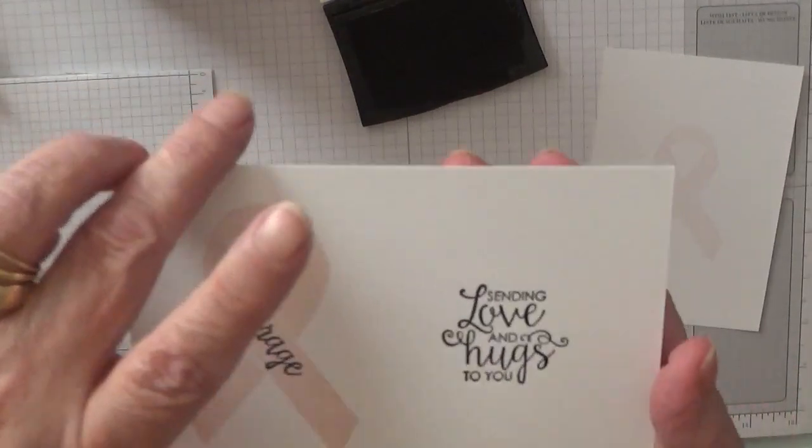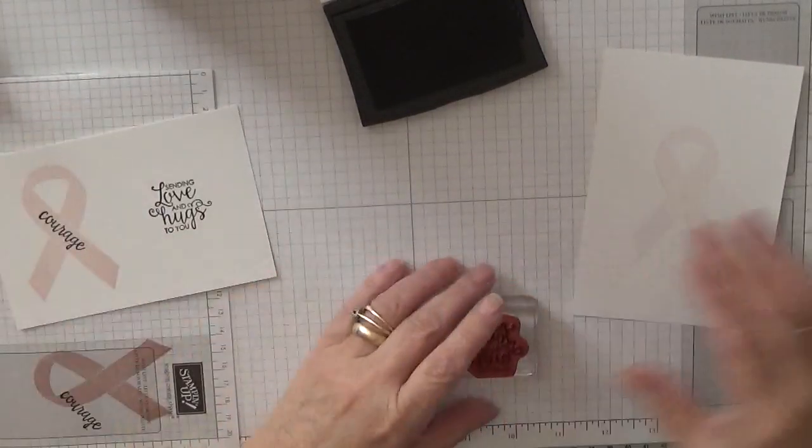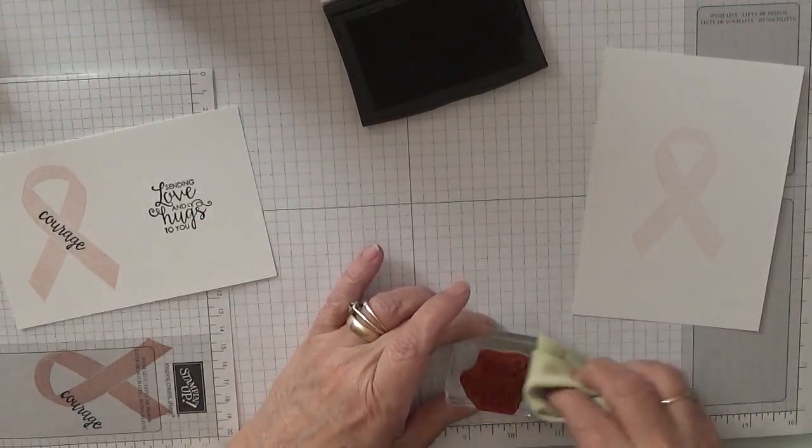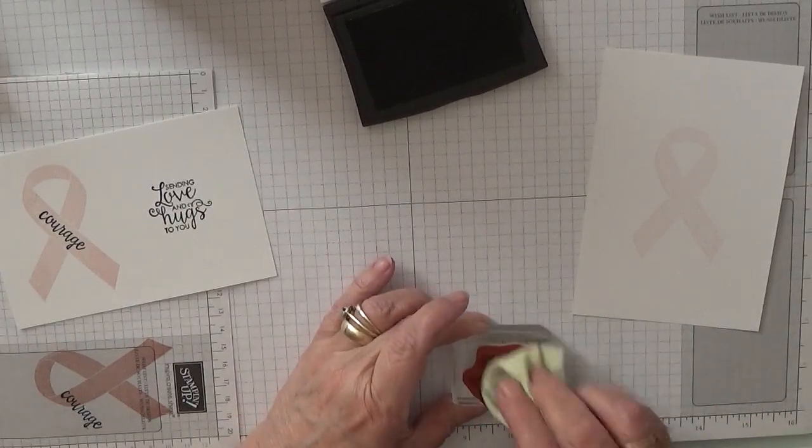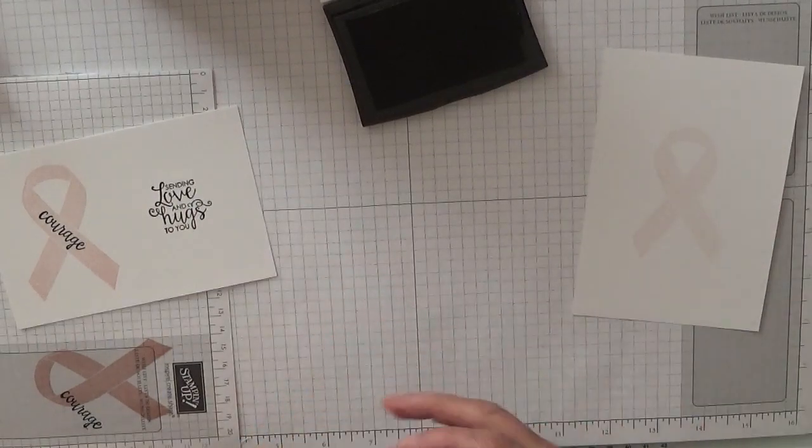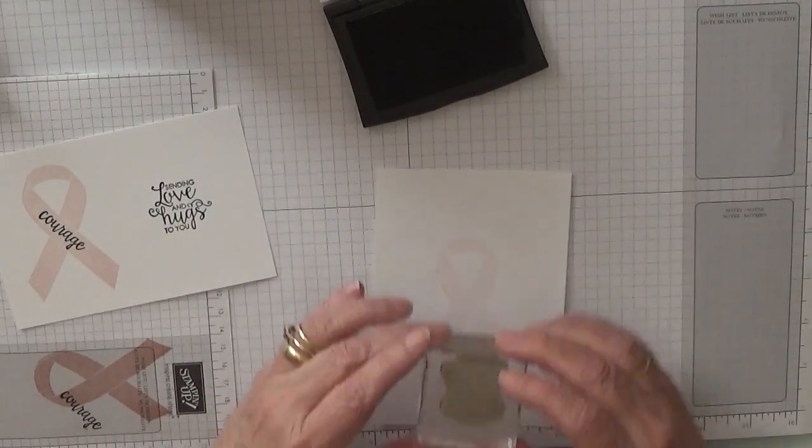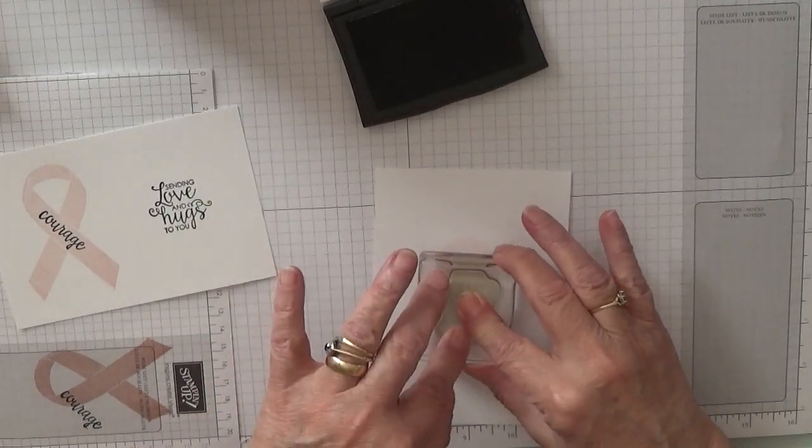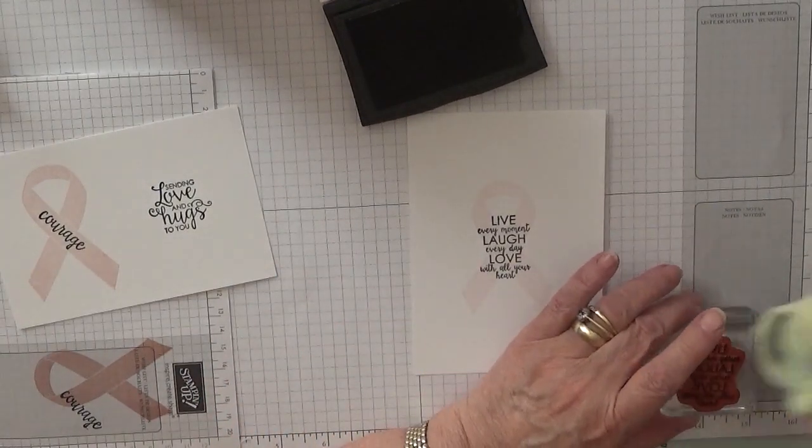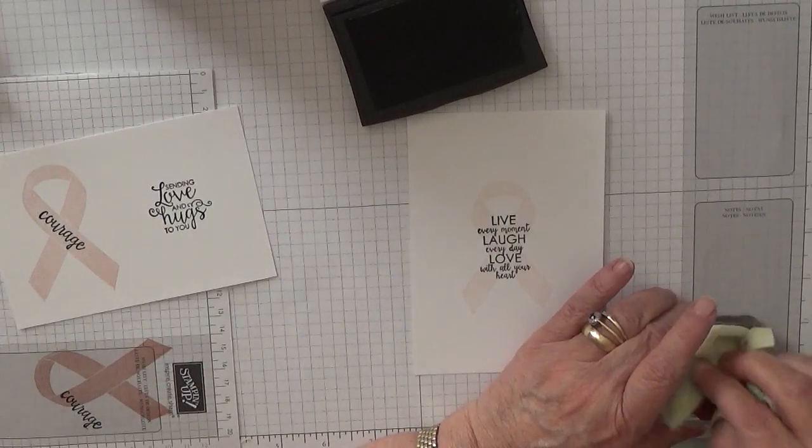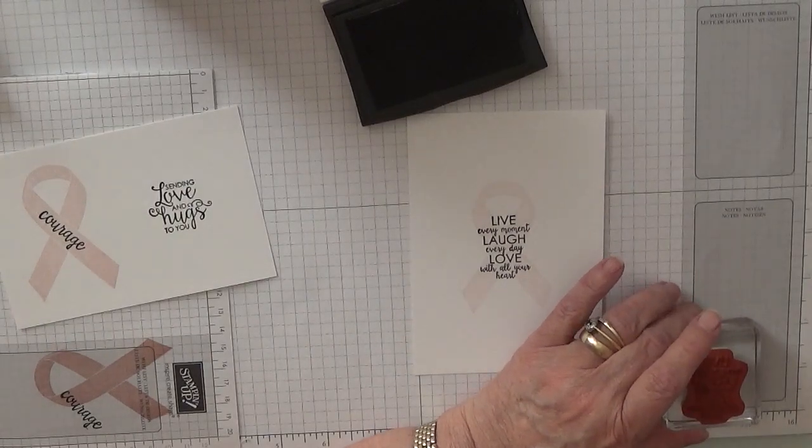So ready to cut out. Look how well that ink stamps—I do like that ink. It does, I'm afraid, stain the stamps if you don't clean them off straight away. And with the other stamp, 'live every moment,' we'll stamp that in the middle of the ribbon. And that is our stamping done.